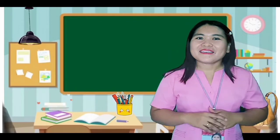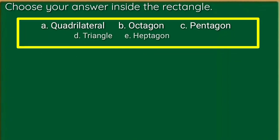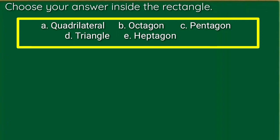You can now visualize, name, and describe polygons. This time, get your paper and answer our evaluation for today. I know that you can do it and answer it correctly. Are you ready? In this activity, you can choose your answer inside the rectangle. Write the letter of the correct answer on your paper.